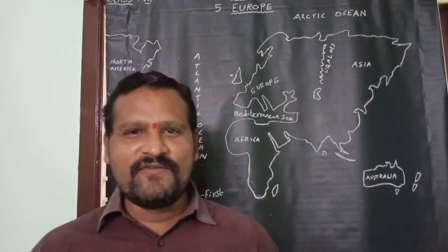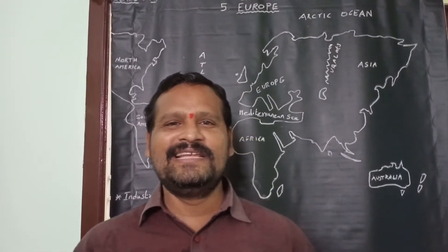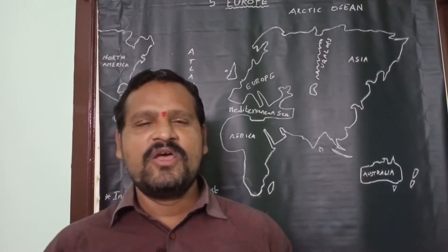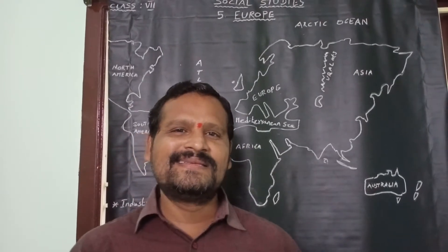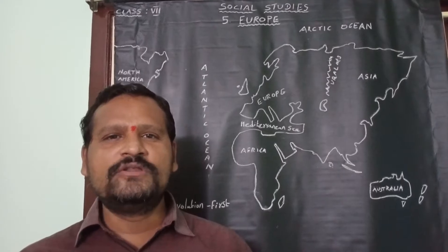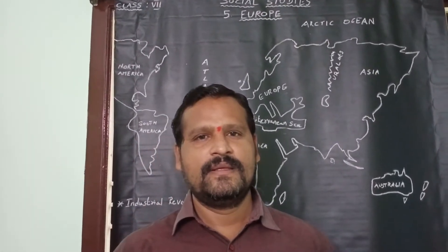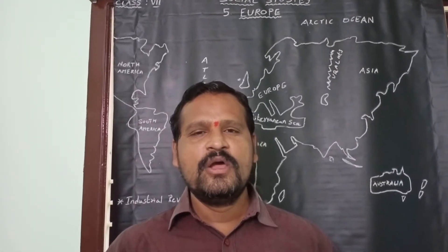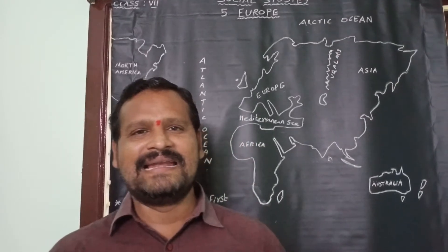Children, shall I ask you one question now? In which continent did the industrial revolution start first? Someone said a good answer — Europe continent. Yes children, the industrial revolution first started in Europe. As factory-based production is predominant in Europe, these Europeans established control over other countries and continents. In this lesson, we are going to learn how the people of Europe used their distinct natural environment and resources.